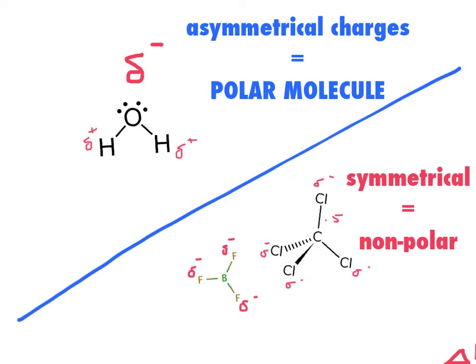In general, any carbon-hydrogen bond, the hydrocarbons, tend to be pretty non-polar. Anytime you've got oxygens and nitrogens involved, you tend to see polar molecules.